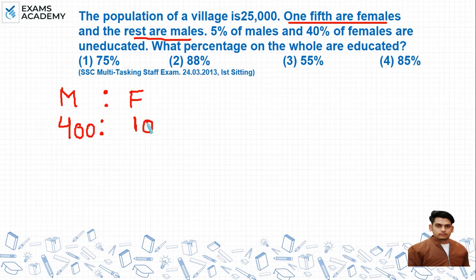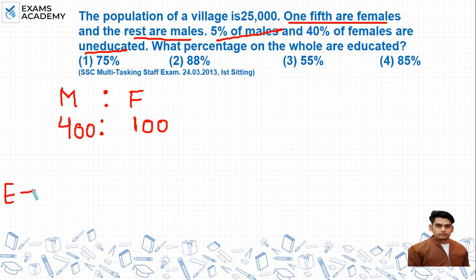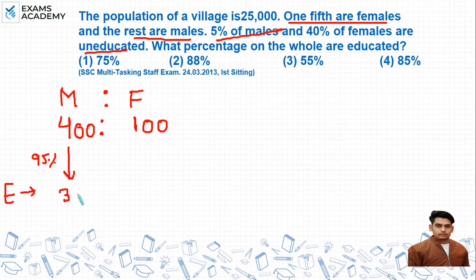Question में कह रहे हैं कि 5% males uneducated हैं, तो हमें educated population find करनी है। अगर 5% males uneducated हैं तो बाकी बचे 95% educated होंगे। तो 400 का 95% हमारे पास आएगा 380।